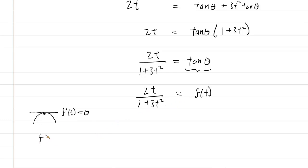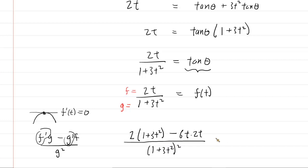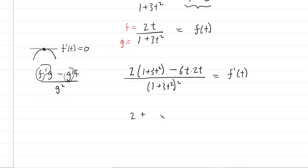When I do a quotient rule I like to use the mnemonic: f prime g minus g prime f, divided by g squared. We let the top function equal f and the bottom function equal g. So f prime — the derivative of the top function 2t — is just 2, multiplied by g, the bottom function. Then subtract g prime, the derivative of g, which is 6t, multiplied by f, which is 2t. Put that over g squared. Simplifying the numerator by distributing the 2 gives 2 + 6t² minus 12t².